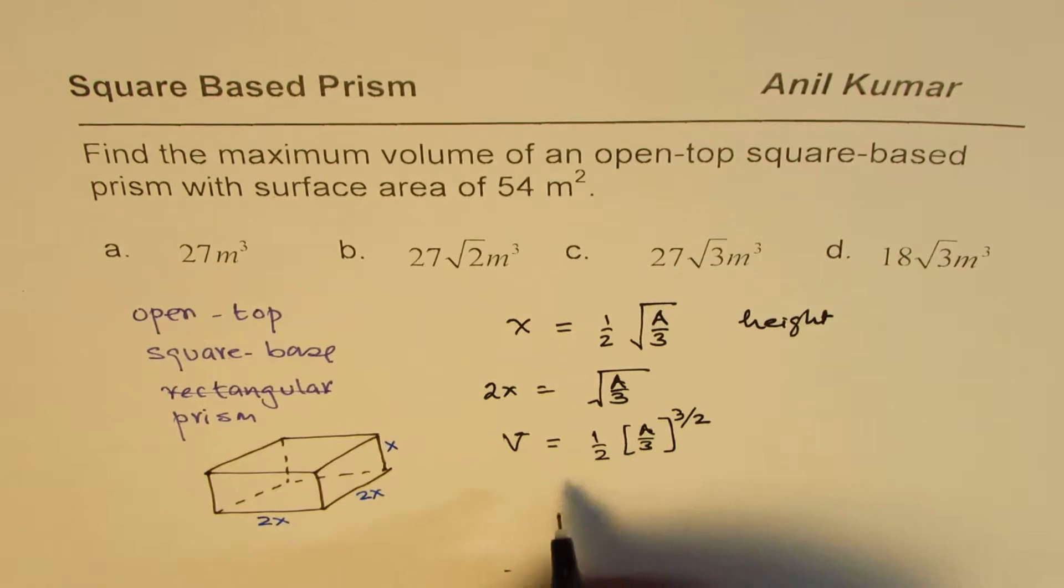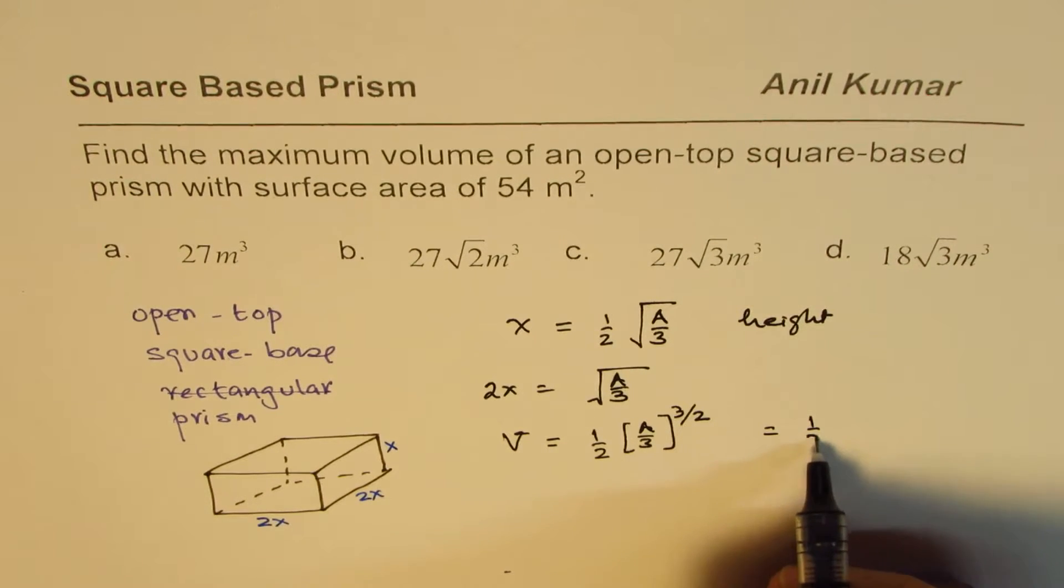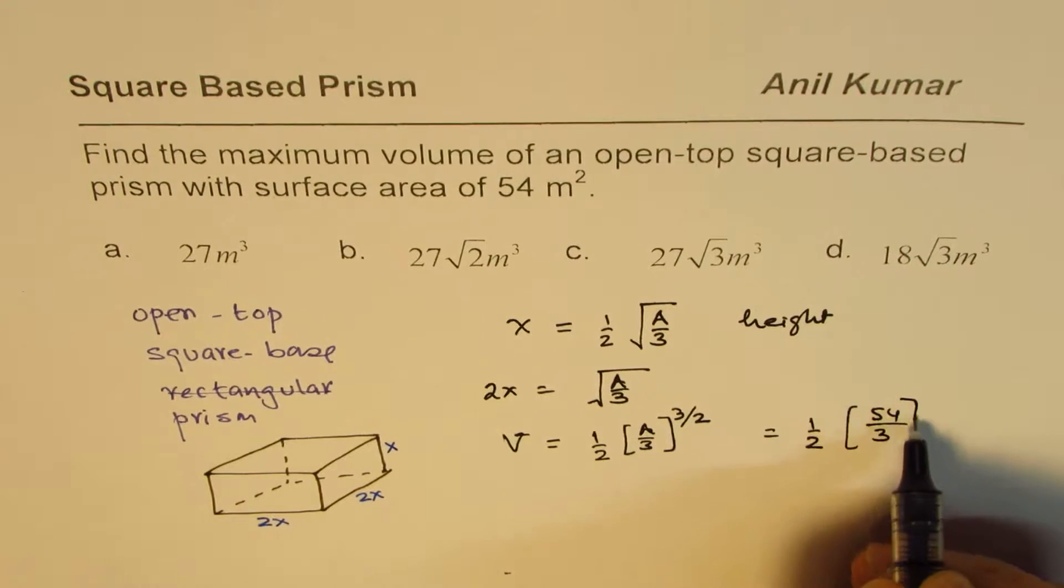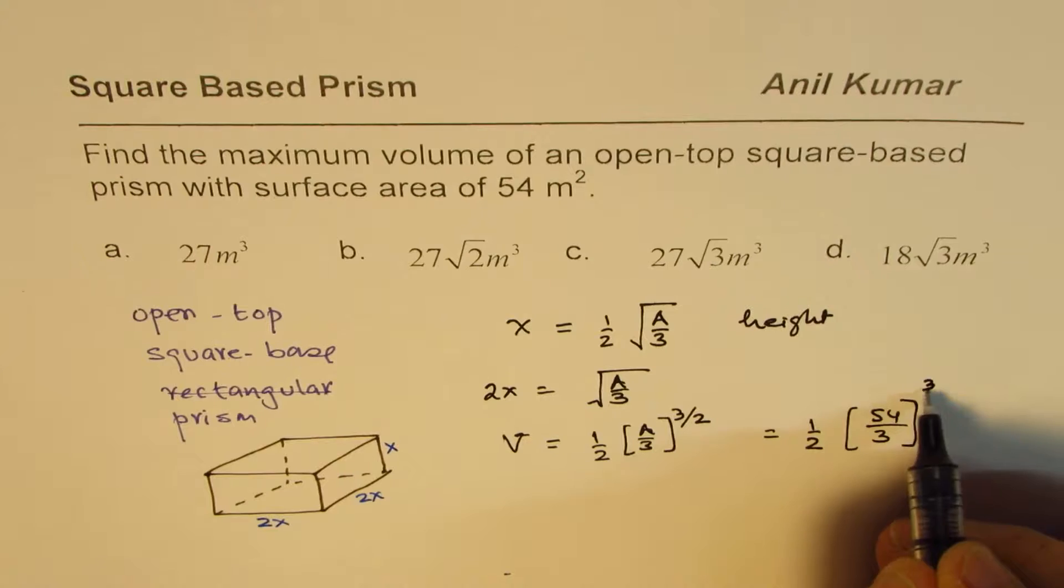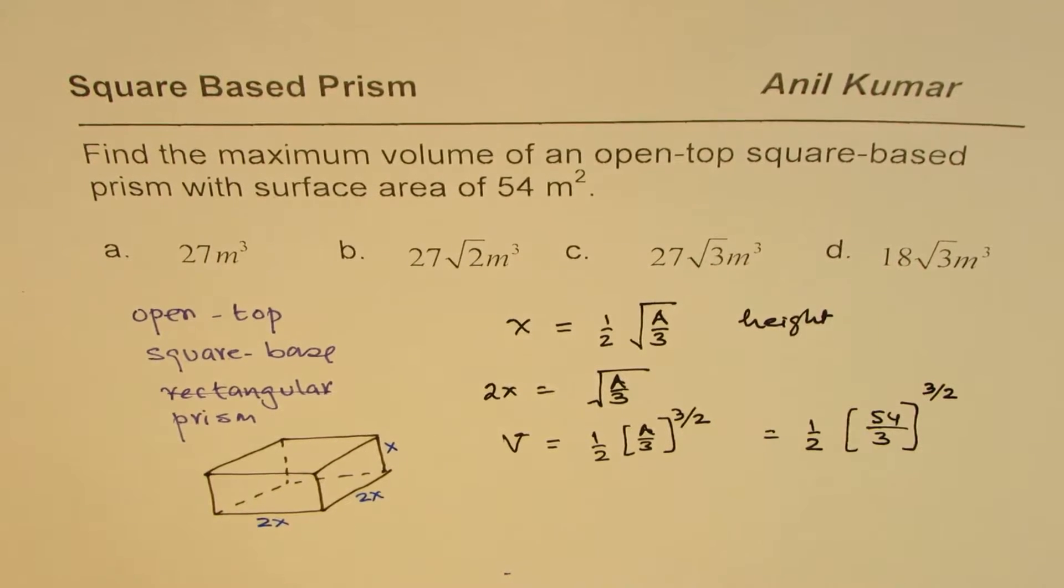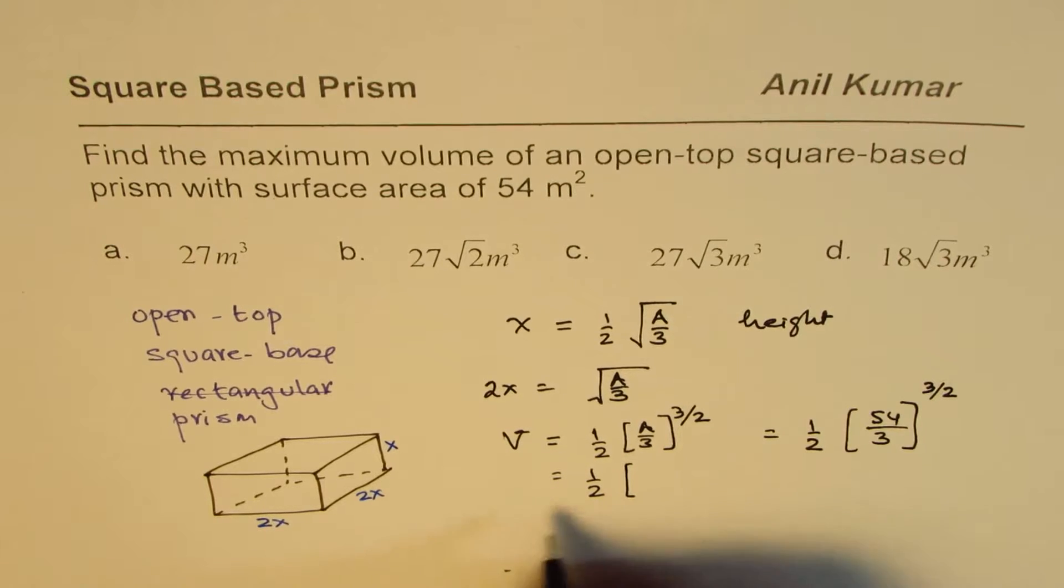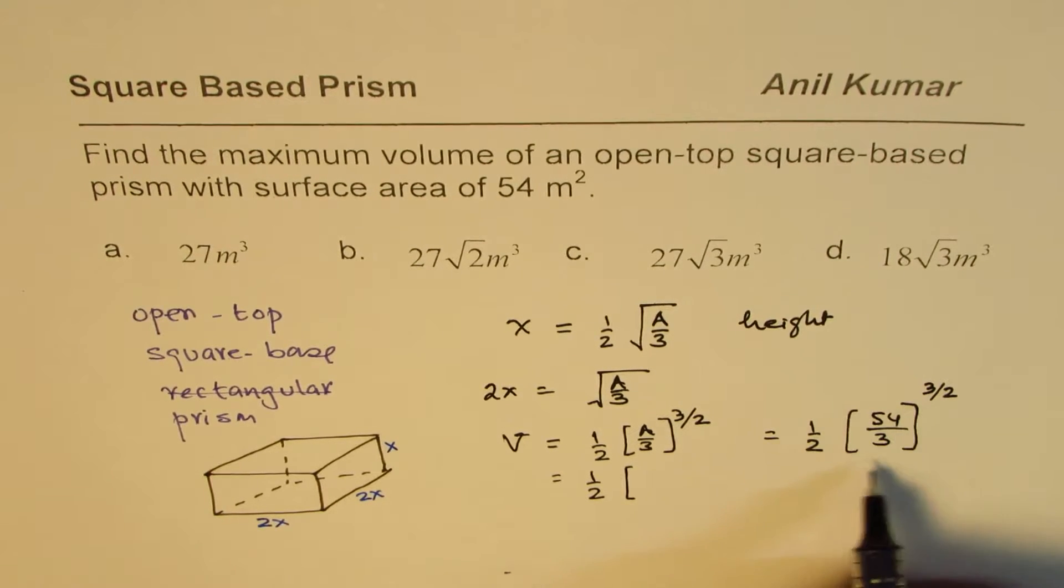So maximum volume: we are given 54 as area. So the maximum volume will be half of 54 divided by 3 to the power of 3 over 2. That is what it is. So which you can say half of—sometimes the calculator is not allowed, so I'm just trying to show you some calculations which could be done without calculator.